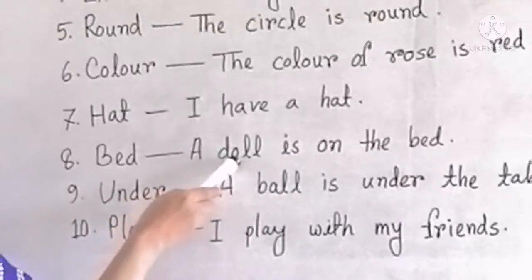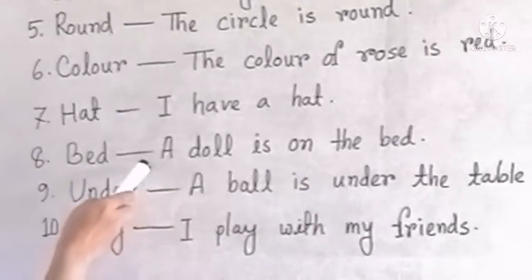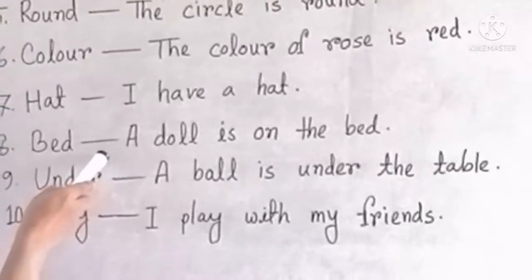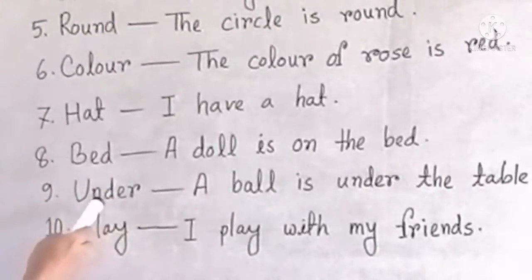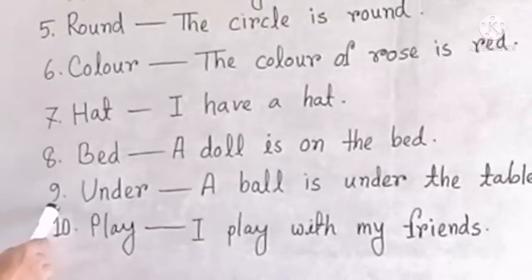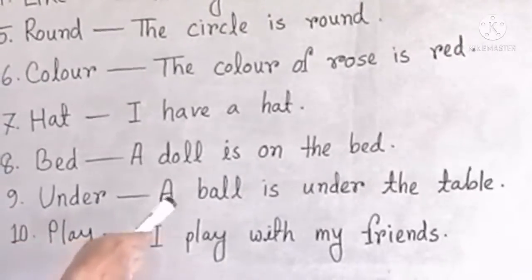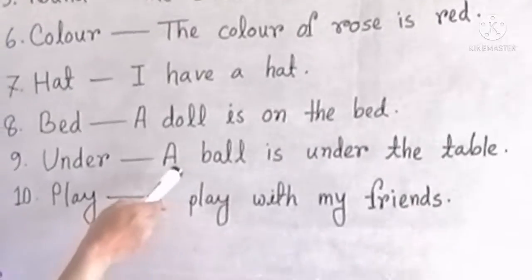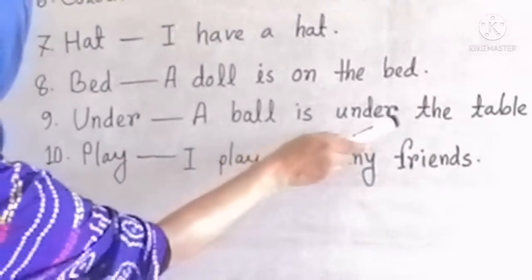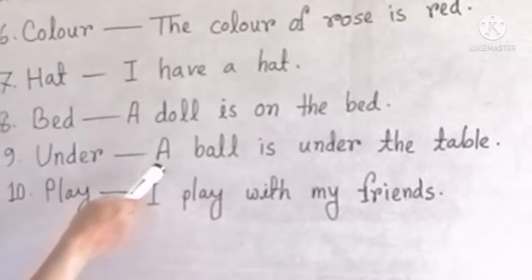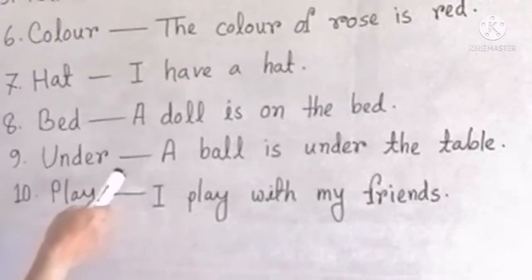The doll is on the dog. The picture is green, the last person says blue doll. Number 9 is under — under or near. The next sentence: a ball is under the table. This is a table near the table.